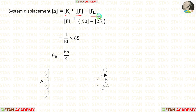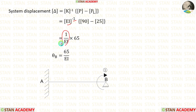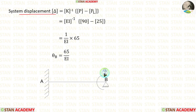We have now calculated everything for the formula. Applying the values, EI inverse is 1/EI. After adding the two matrices, we get 65. Therefore the system displacement — the slope theta B at point B — is 65/EI.